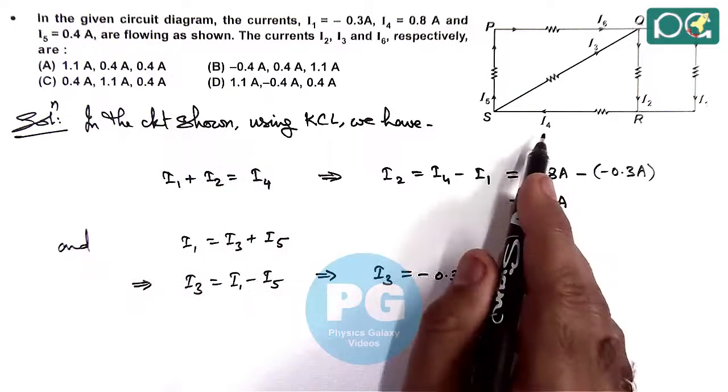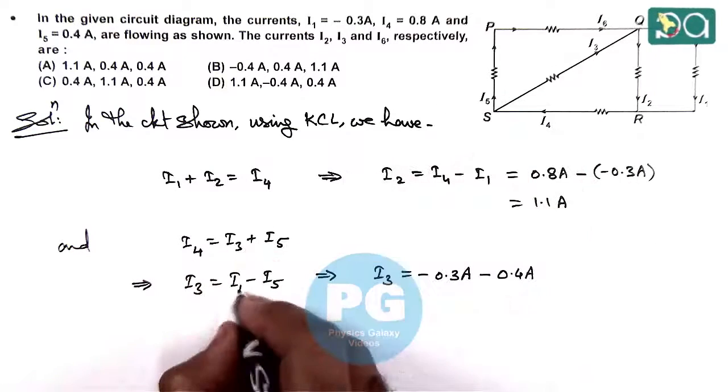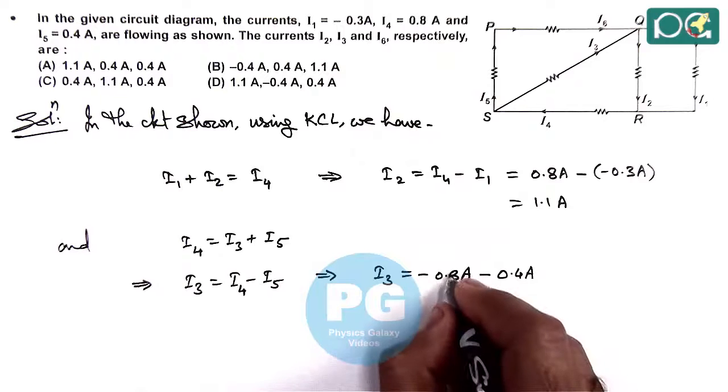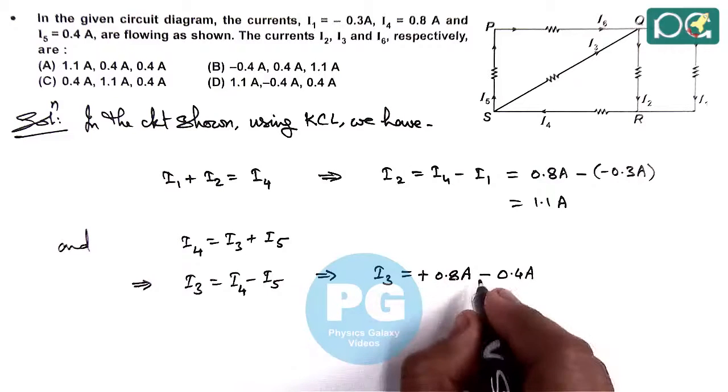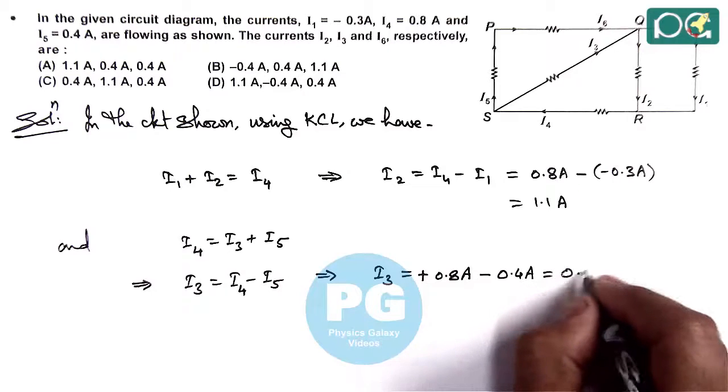Here, i4 is equal to i3 plus i5, so this is i4 minus i5. So i4 we are having 0.8 ampere minus 0.4 ampere, so this is giving us 0.4 ampere.